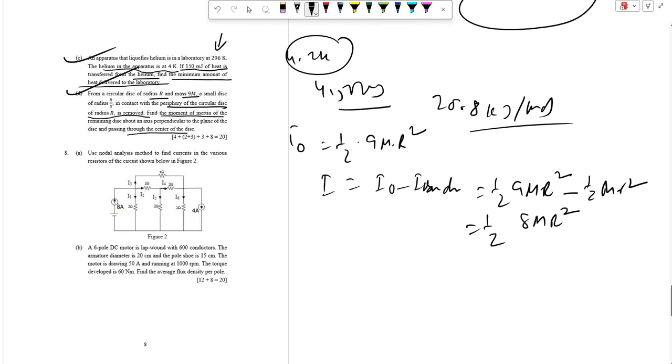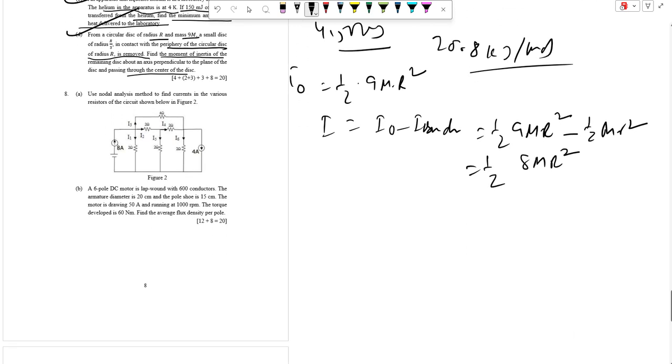The ratio of the final to initial moment of inertia is I by I₀ is 8M R square, 9M R square that is 8 by 9.